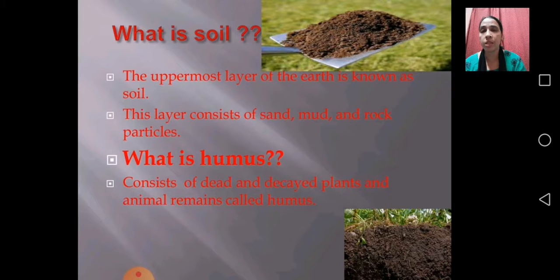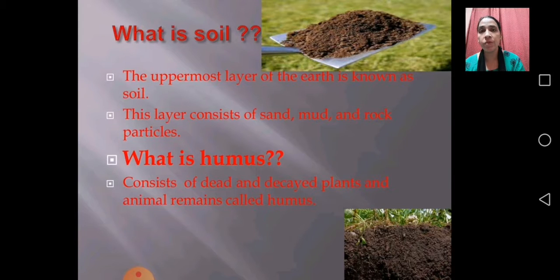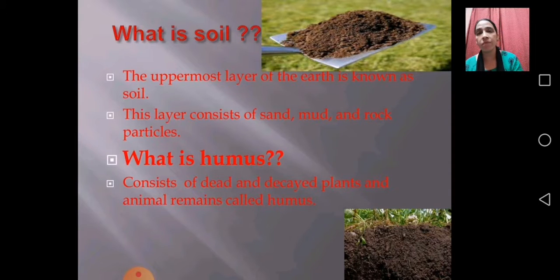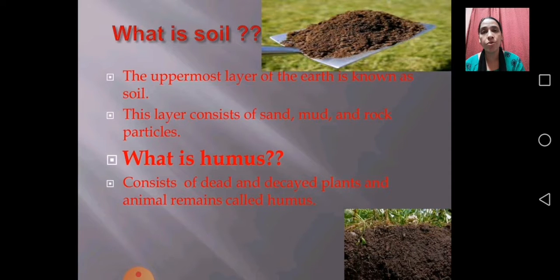So the simple definition: what is soil? The uppermost layer of the earth is known as soil. This layer consists of sand, mud, and rock particles. All such kinds of particles you will be finding in this uppermost layer. This completes the definition of soil — you can write it down.